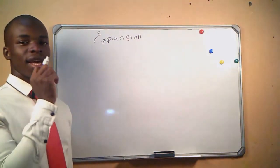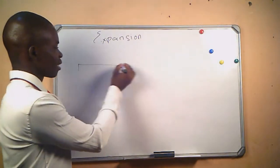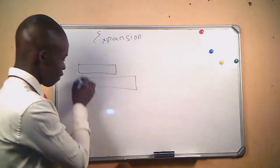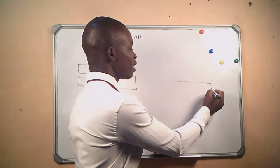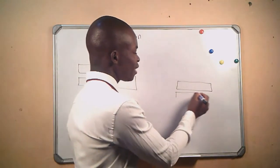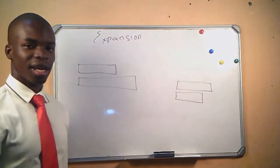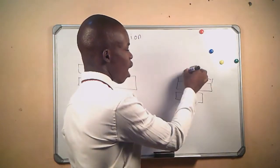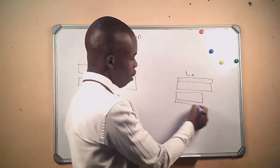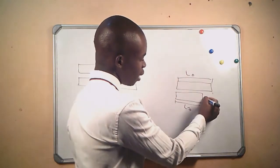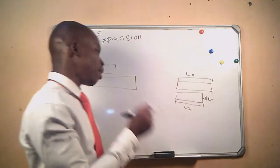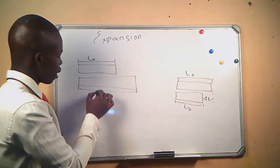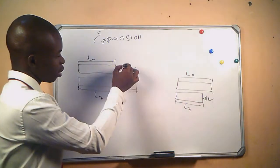We know that when the temperature of a material is increased, the material will increase in length. And the opposite is also true — when temperature is decreased in a material, the length will also decrease. So we have this being our original length and this being our final length, and this portion here is our change in length — the length difference between these two.